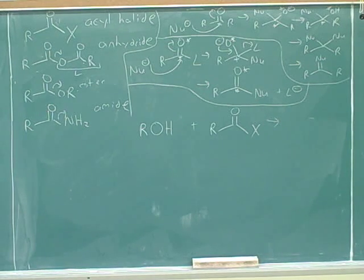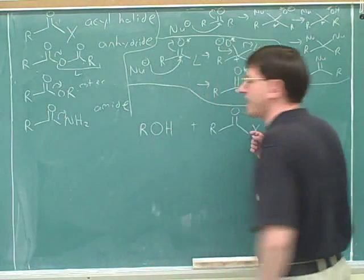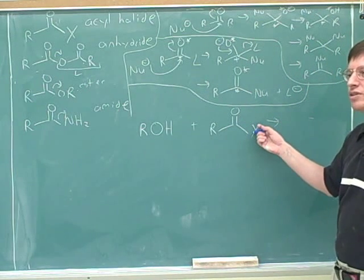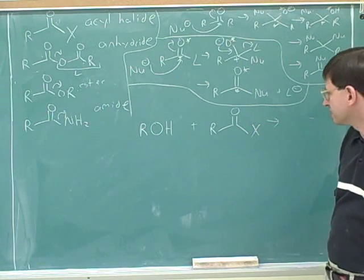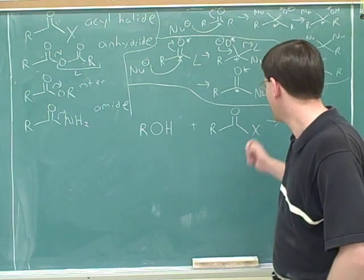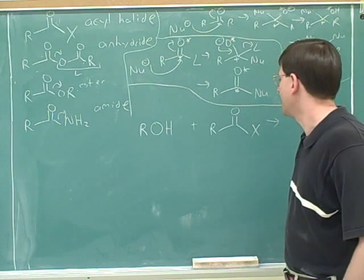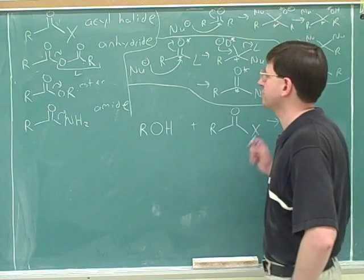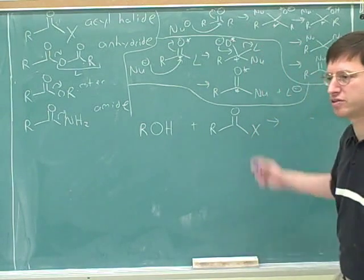Well we can identify that up front. Remember that X stands for any halogen. X is the general symbol in organic chemistry for any halogen. So this could be any halogen over here. And you have identified that this is an acyl halide and the X is probably going to be our leaving group.